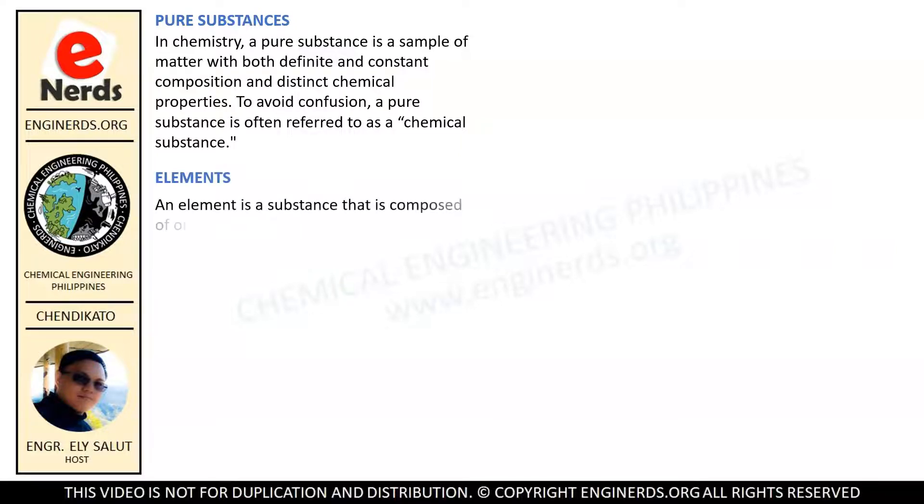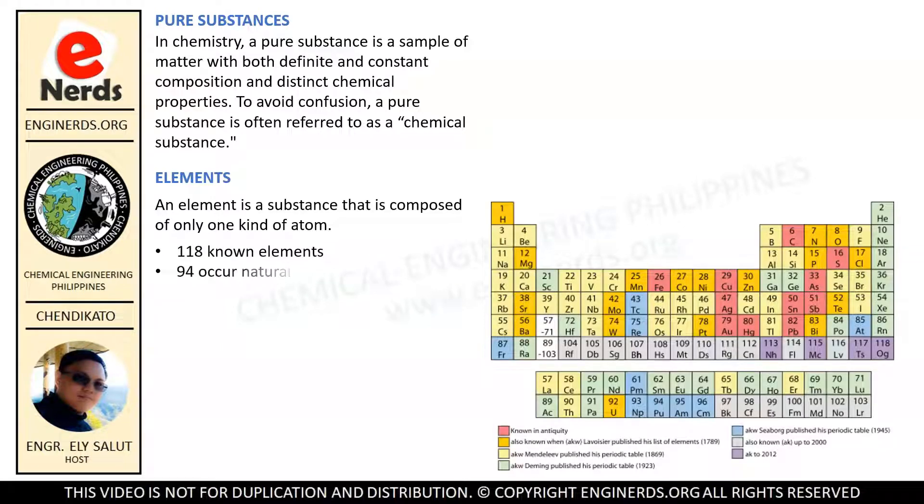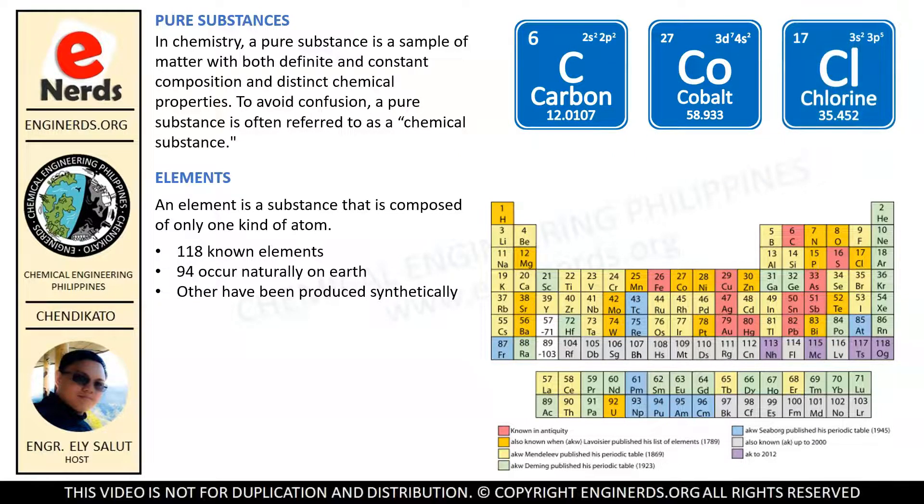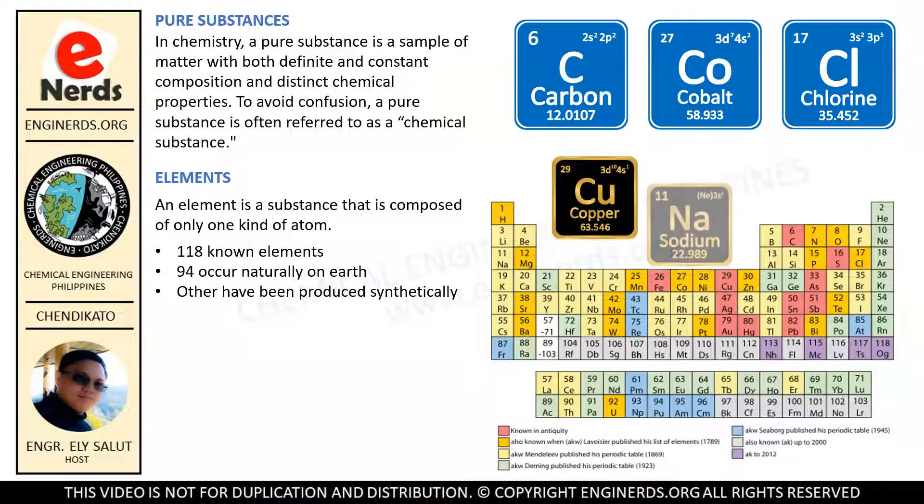An element is a substance that is composed of only one kind of atom. There are presently 118 known elements. In this context, known means observed well enough, even from just a few decay products, to have been differentiated from other elements. Of these 118 elements, only 94 occur naturally on earth and the others have been produced synthetically. Each of the elements has a symbol, which is the abbreviation for the name. This symbol consists of the first letter of the name, which is capitalized, and in some cases one other letter which is not capitalized. For example, the symbol for carbon is C, the symbol for cobalt is Co, and the symbol for chlorine is Cl. Some of these symbols came from Latin names, such as Cu for copper from the Latin word cuprum, and Na for sodium from the Latin word natrium.